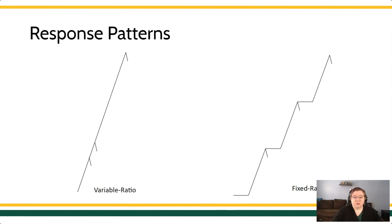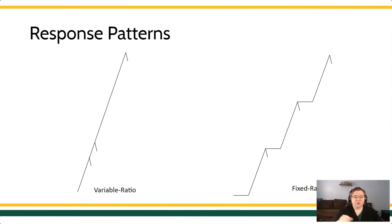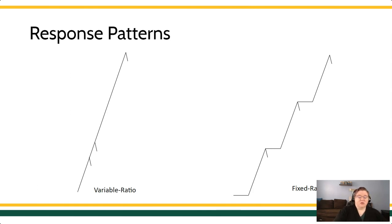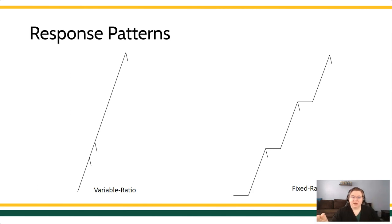The difference is like a slot machine, where people pull for hours because it's always based on the number of pulls but the required number is different every time — very smooth, consistent, robust rate of responding. Compare that to something like: give me ten responses and then you earn your reinforcer. You'll get your ten responses, and then the learner will take a break.